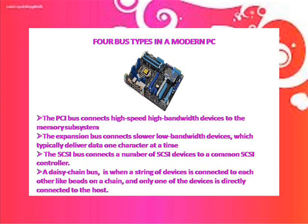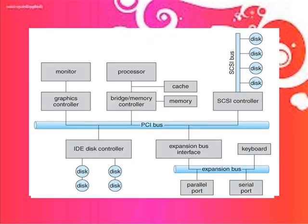There are four bus types in a modern PC. The PCI bus connects high-speed, high-bandwidth devices to a memory subsystem. The expansion bus connects slower, low-bandwidth devices which typically deliver data one character at a time. The SCSI bus connects a number of SCSI devices to a common SCSI controller. A daisy-chain bus is when a string of devices is connected to each other, and only one of the devices is directly connected to the host. This is an example of the four buses.